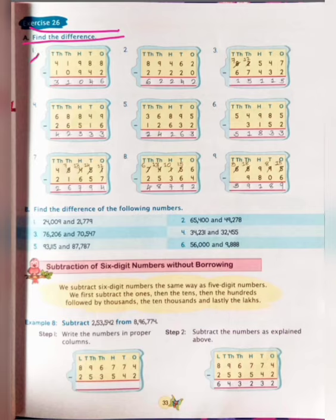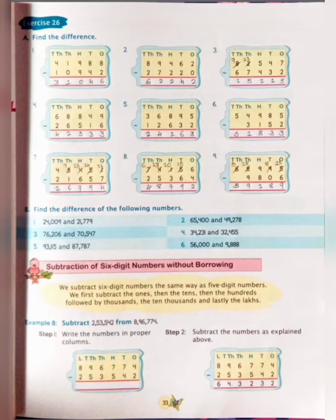Number 1, you can see here: 41,988 minus 10,942. First of all, we will count the 1's place: 8 minus 2 is equal to 6. 10's place: 8 minus 4 is equal to 4.